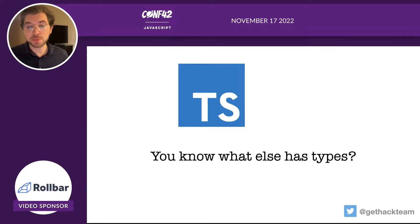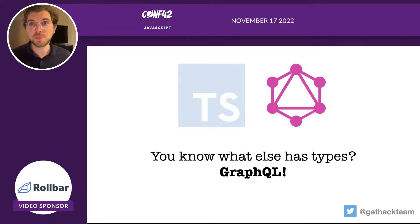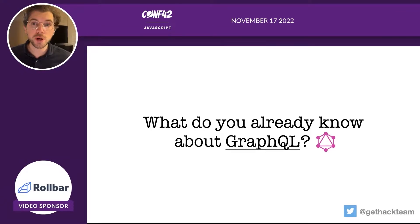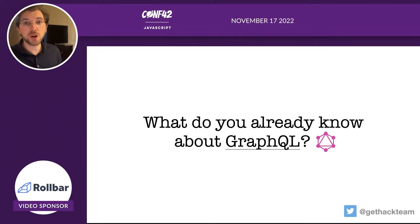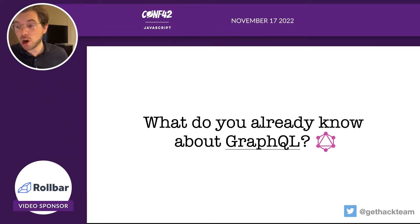Now that we know TypeScript has types, maybe you can guess what else has types. Of course — this talk is about TypeScript and GraphQL, so you could have guessed that both have types, and these type systems can play along nicely as I'll show you later. But first, let's cover what you already know about GraphQL. Maybe you're familiar with TypeScript but haven't used GraphQL before, or vice versa. Both technologies have been around for almost ten years, so most of you have probably heard about them, even if you haven't had the pleasure of using them.